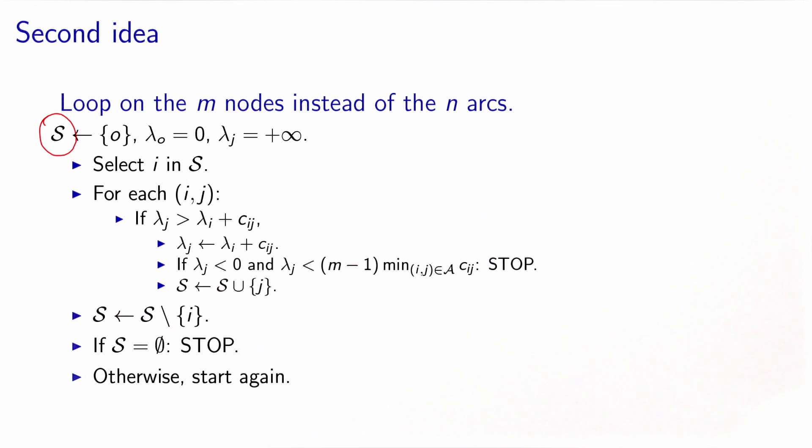And of course, a path from o to o has length zero. So this is a good interpretation. And because we have not seen any node yet, we initialize the labels of all the other nodes to plus infinity. And one iteration of the algorithm starts by selecting a node in S.